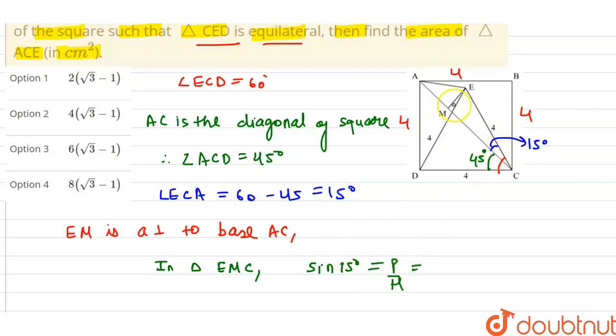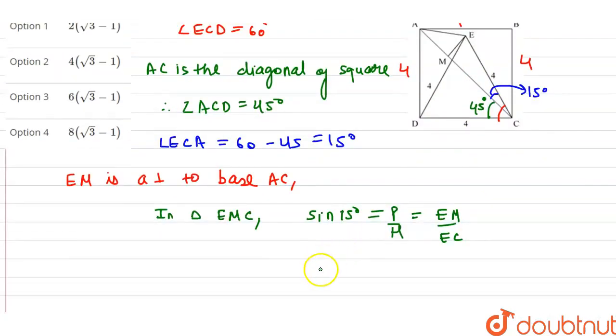So this is my theta, this is the base, this is perpendicular to hypotenuse. So the perpendicular is EM, the hypotenuse is EC which is 4, because it is equal to 4.